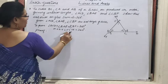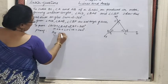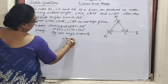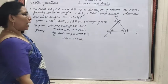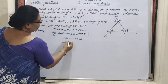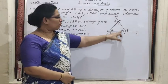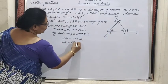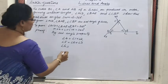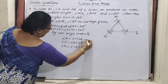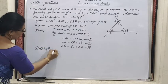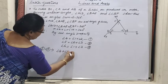By exterior angle property: for angle 4, the closest interior angle is 3, so the non-adjacent interior angles are 1 and 2, giving angle 4 equals angle 1 plus angle 2. Similarly, angle 5's closest angle is 1, so angle 5 equals angle 2 plus angle 3. Angle 6's closest angle is 2, so angle 6 equals angle 1 plus angle 3. Adding all three equations gives angle 4 plus angle 5 plus angle 6 on the left side.